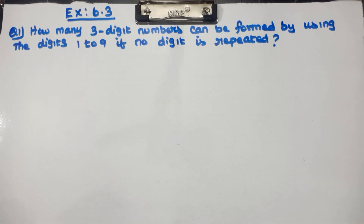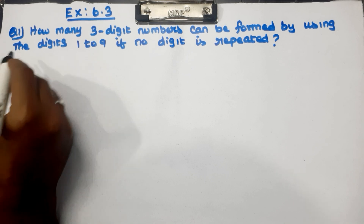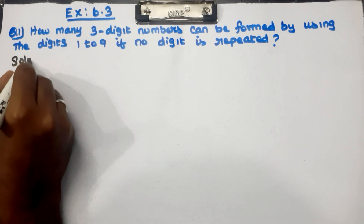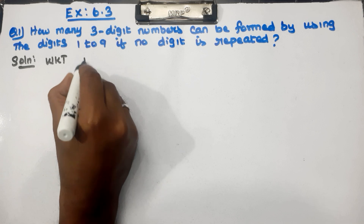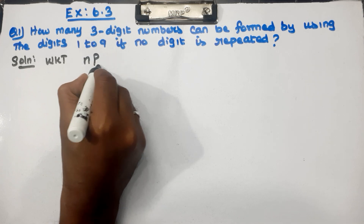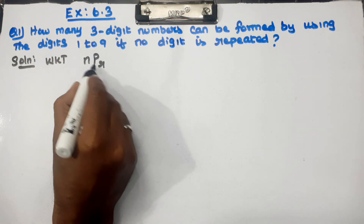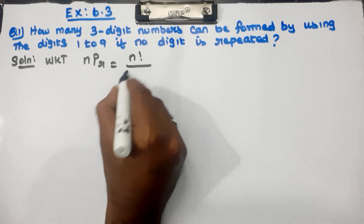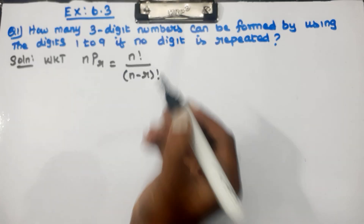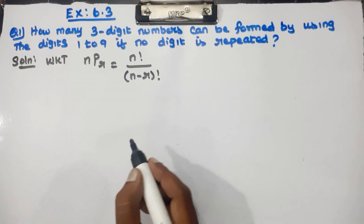We need to arrange 3-digit numbers, so this is a permutation. The permutation formula is: N P R equals N factorial divided by (N minus R) factorial.